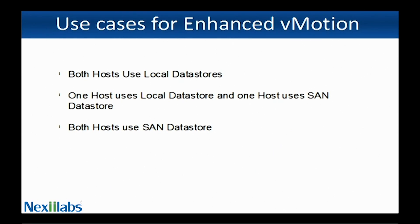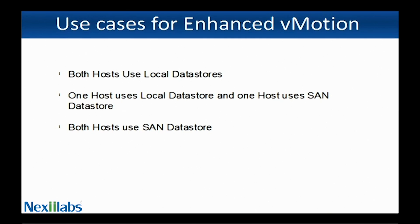Enhanced vMotion can only be used with the vSphere Web Client; it is not available in the vSphere Client. Enhanced vMotion can be used for scenarios where both hosts use local datastores — in this case, Storage vMotion is done first because it takes longer to complete, then the memory copy is started. All data transfers occur over the same vMotion VMkernel port. Another scenario is where one host uses local datastores and the other uses SAN datastores. Lastly, enhanced vMotion can be used where both hosts use a shared SAN — in this situation, the VM memory data transfer is carried over the vMotion network, while Storage vMotion uses the storage network to migrate storage data.